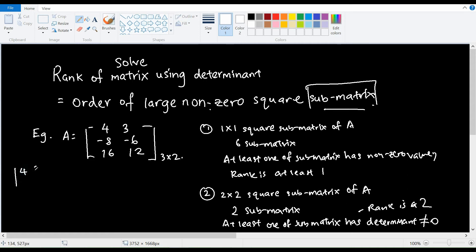the first one is 4, 3, negative 8, and negative 6. The second one is negative 8, negative 6, 16, and 12. So we evaluate the determinant of these 2 submatrices. The determinant of the first submatrix is 4 times negative 6, minus negative 8 times 3,